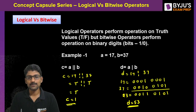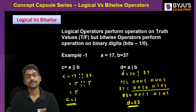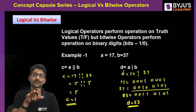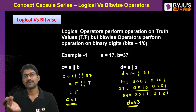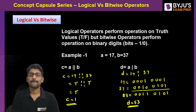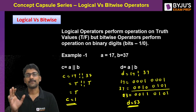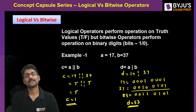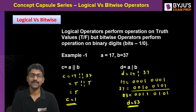The bitwise OR result 00110101 is 53, so d = 53. For the same a and b, when you use the logical OR you get 1, but when you use the bitwise OR you get 53. So logical operation and bitwise operation are not the same — you can see the clear difference between logical and bitwise.